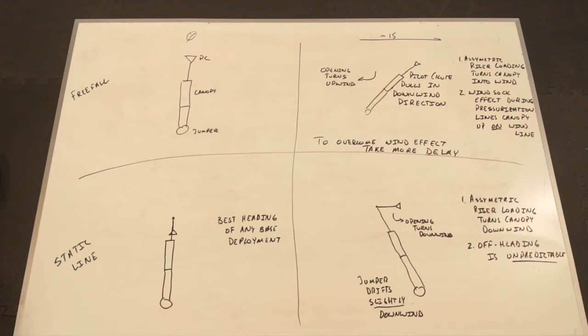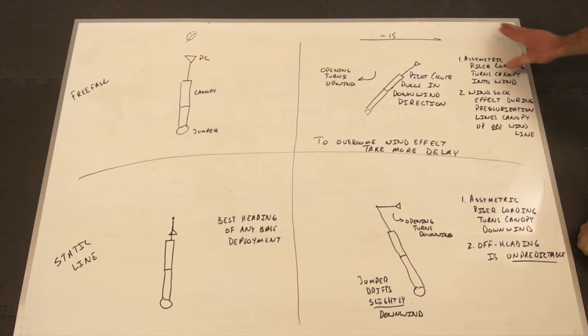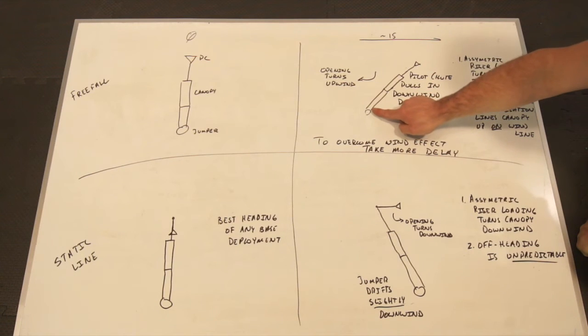Let's talk about what happens in a free fall deployment. In this diagram, I've drawn a free fall deployment in a crosswind condition. Generally, what we see during this is that the wind will pull the pilot chute in the downwind direction. That means the extraction happens at an angle to the jumper, which means that the upwind riser will load first. The downwind riser will still be slack, because the canopy is extracting to one side.